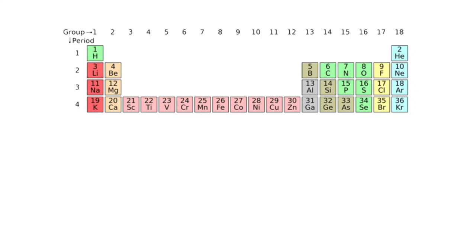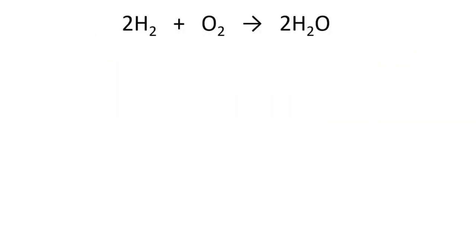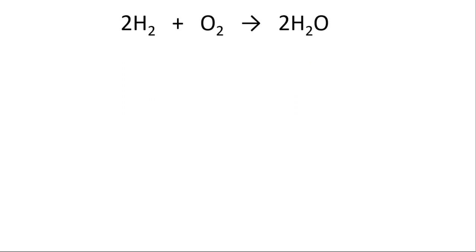To do stoichiometry, you have to be 100% confident on how to interpret a chemical equation. This reaction is telling you that two hydrogen gas molecules — that is two H₂ molecules — will react with one O₂ molecule, and form two water molecules. In chemistry we never work with individual molecules, so we work with moles. This tells us that two moles of H₂ will react with one mole of O₂ and create two moles of H₂O.